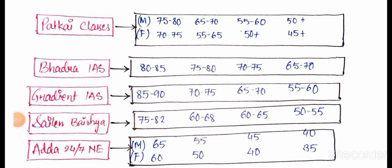This is 80 to 85 for general male. FM has not categorized but this is important. Gradient IAS is 85 to 90. Sailin Baishya, everyone who knows about Assam history books related must be knowing him. He said 75 to 82 for general male or general category.